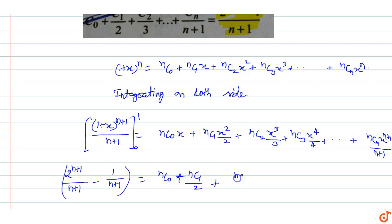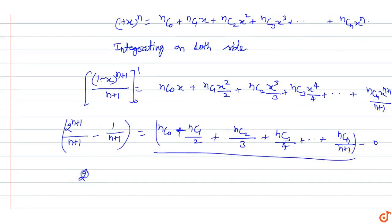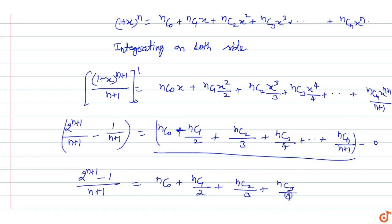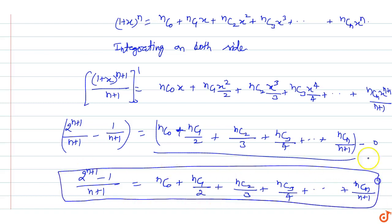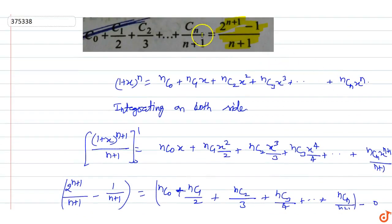Putting x equal to 0 on the right side gives 0. Therefore, the sum of binomial coefficients equals 2 raised to power n plus 1 minus 1 upon n plus 1, which equals nC₀ plus nC₁ upon 2 plus nC₂ upon 3 plus nC₃ upon 4, up to nCₙ upon n plus 1. Hence the value is equal to 2 raised to power n plus 1 minus 1 upon n plus 1. This is the answer for this question.